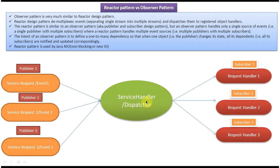So the simple difference is: in the observer pattern there will be only one publisher but many subscribers, whereas in the reactor pattern there will be multiple publishers and multiple subscribers. This reactor pattern is used in the Java NIO package — the non-blocking or new IO package.